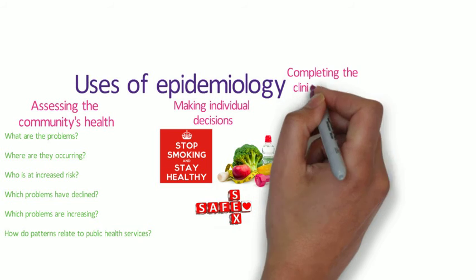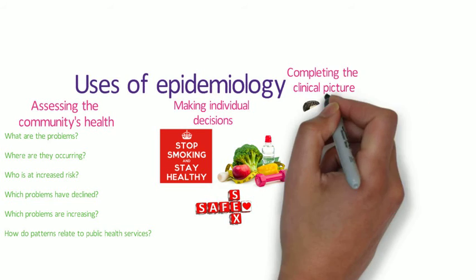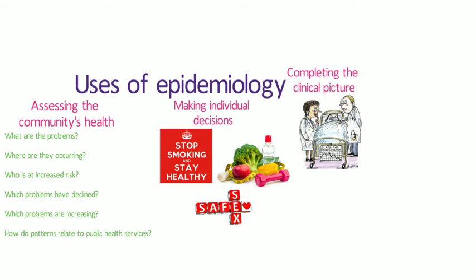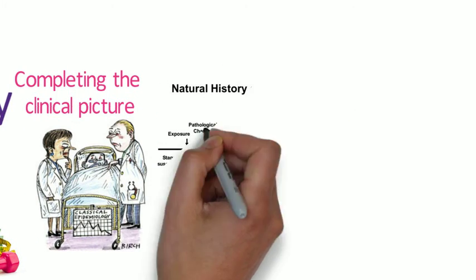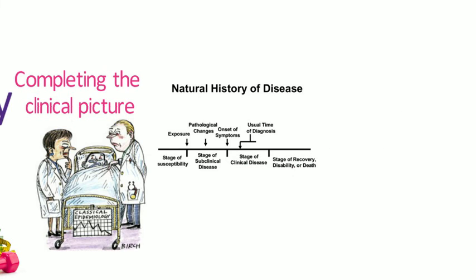When investigating a disease outbreak, epidemiologists rely on healthcare providers and laboratories to establish the proper diagnosis of individual patients, but epidemiologists also contribute to physicians' understanding of clinical practice and natural history of disease. For example, in late 1989, a physician saw three patients with unexplained eosinophilia, which is an increase in the number of a specific type of white blood cells called eosinophils, and myalgias, which are severe muscle pains. Although the physician could not make a definitive diagnosis, he notified public health authorities. Within weeks, epidemiologists had identified enough other cases to characterize the spectrum and course of the illness that came to be known as eosinophilia myalgia syndrome.